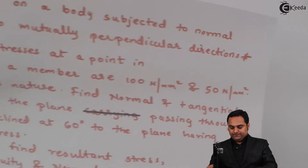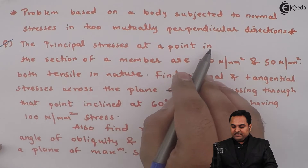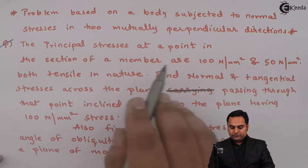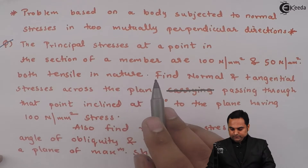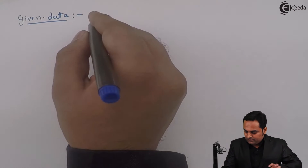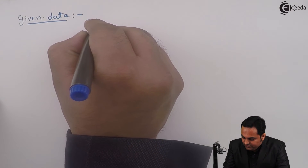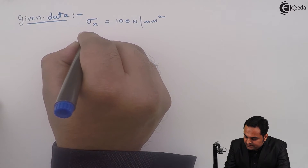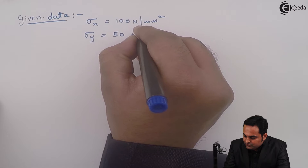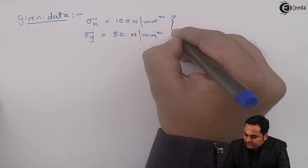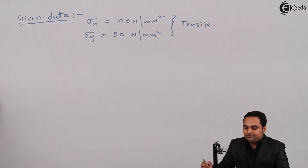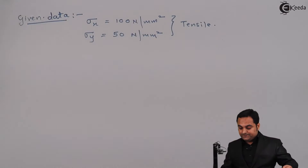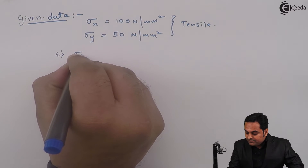It is given that the principal stresses at a point in the section of a member are 100 Newton per mm square and 50 Newton per mm square, both tensile in nature. So the first principal stress is Sigma X = 100 N/mm² and the second is Sigma Y = 50 N/mm², both positive as they are tensile.